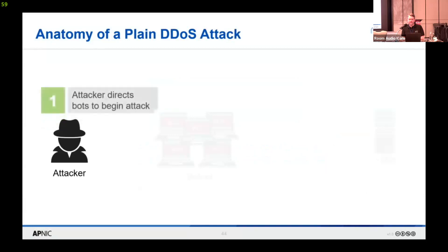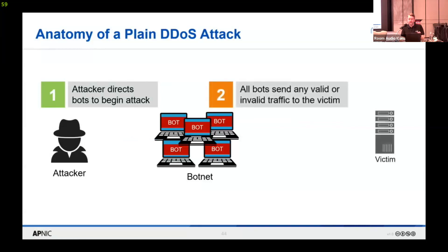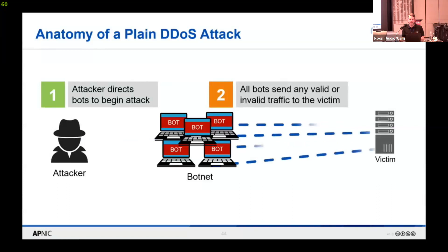If we look at a plain DDoS attack, the main difference is the introduction of a botnet — a network of malware-infected computers under the control of the attacker. The attacker sends a message to the botnet directing them to take action on their behalf, and then the bots all send traffic to the victim. The traffic can be valid, like HTTP requests, or invalid — just flooding the connection with lots of bandwidth. All of these bots send their traffic to the victim, overwhelming them.